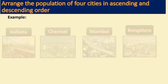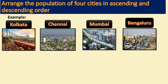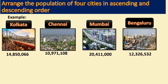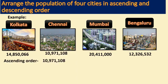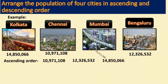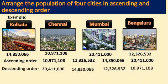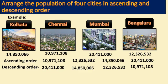Let us see how to arrange the population of 4 cities in ascending and descending order. The population is given in the international system. The number with fewer millions comes first in ascending order, followed by Bengaluru, then Kolkata, and finally Mumbai. Therefore, Mumbai is the most populated city. In descending order, write the population from higher to lower.